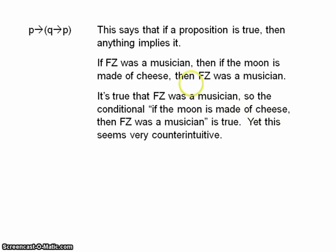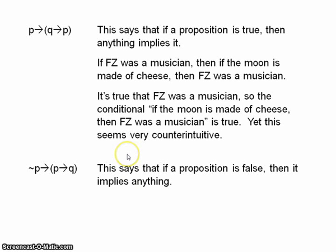Another problematic inference for Lewis was if not P, then if P, then Q. And this simply says that if a proposition is false, then it implies anything. And, you know, you can try that again. Take if the moon is made of cheese. Well, that's a false proposition. So, on material implication, that statement implies anything at all. So any conditional of which this is the antecedent would be a true conditional.